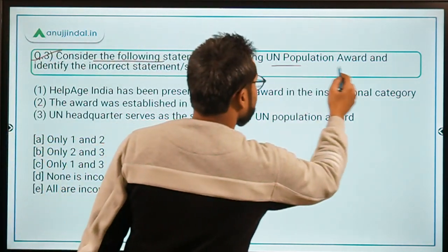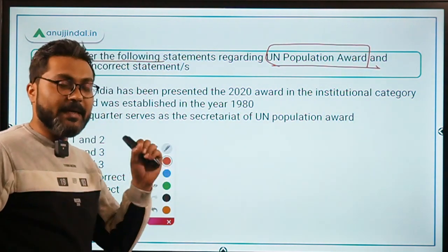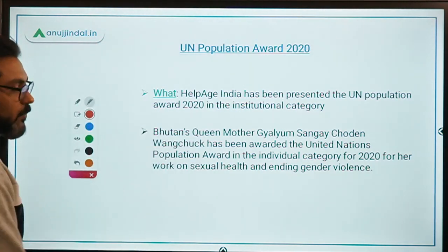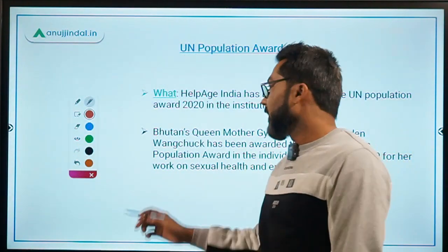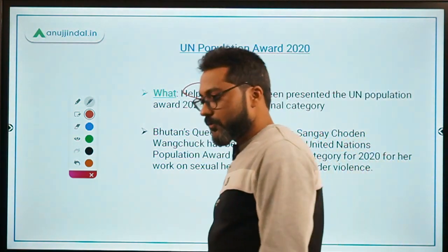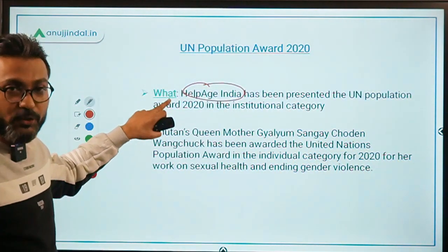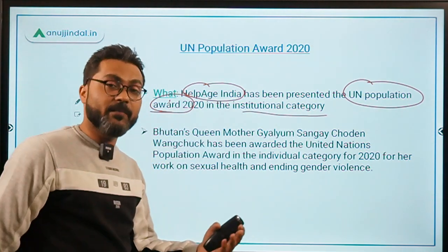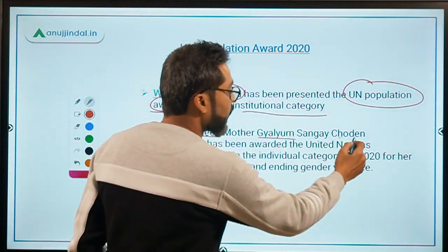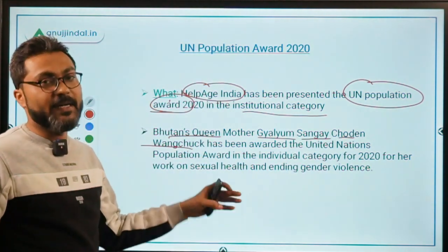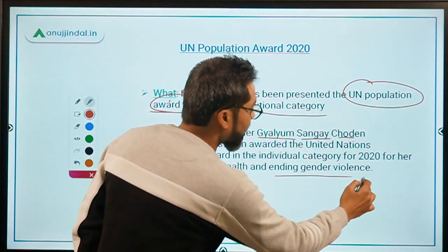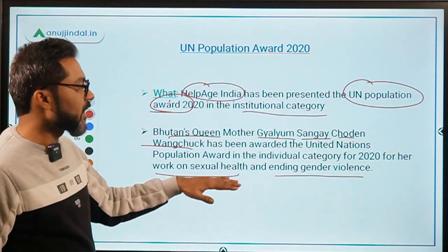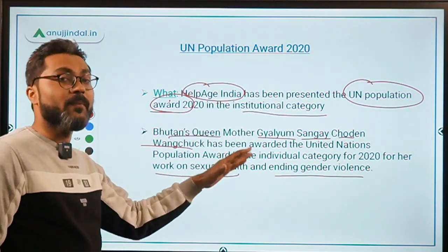Question 3 asks you to consider statements regarding the United Nations Population Award and find the incorrect ones. Help Age India, a charity in our country that works for reproductive health issues, has been presented this award in the institutional category. In the individual category, Bhutan's Queen Mother Gyalio Sangai Vanchuk has been awarded the prize for her work on sexual health and ending gender violence.